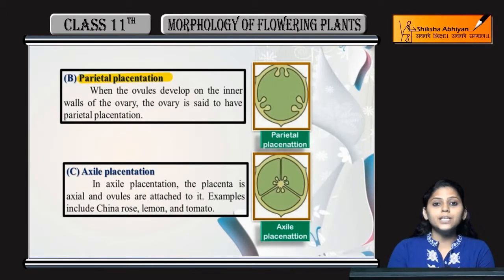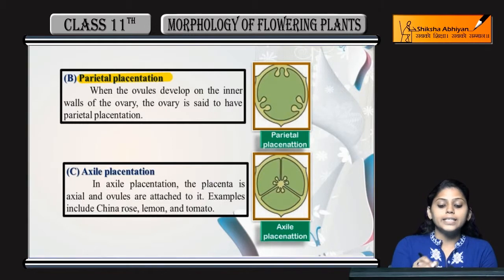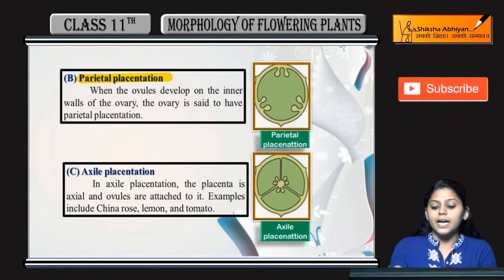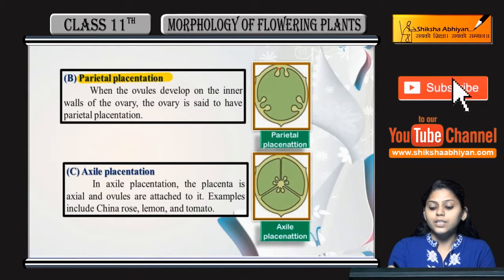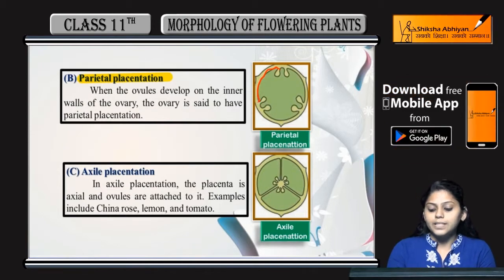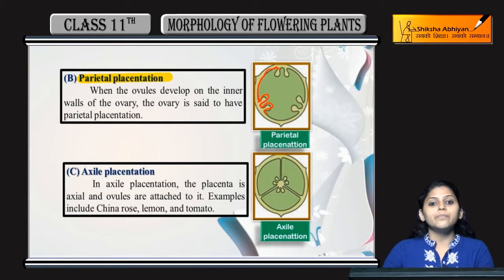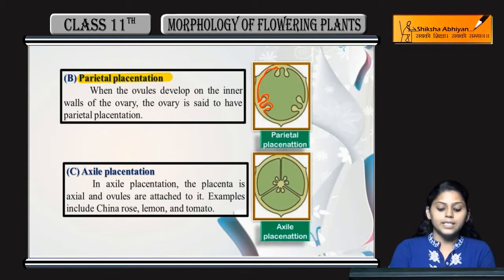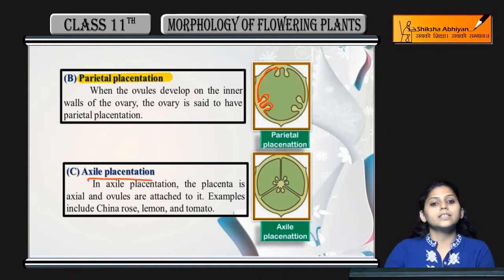Next is parietal placentation. In this, the ovules are attached to the inner lining of the ovary wall. Ovules present on the inner lining of the placenta are called parietal placentation.